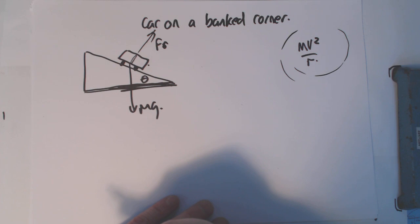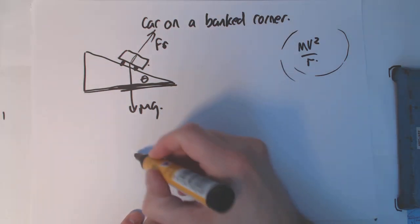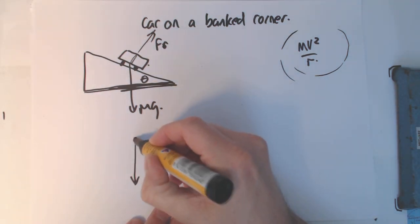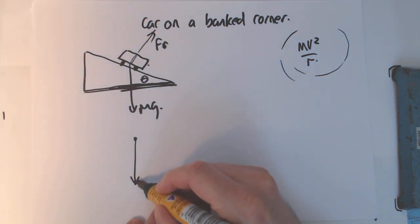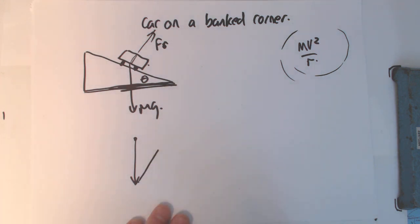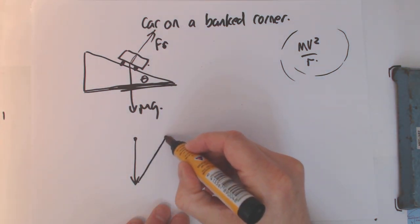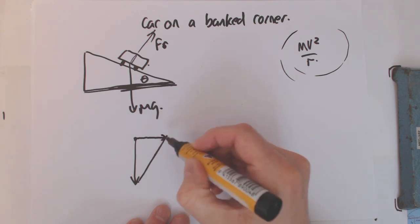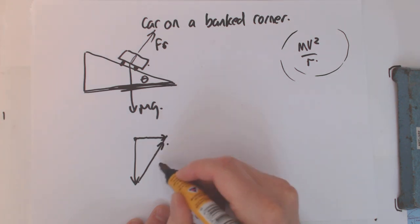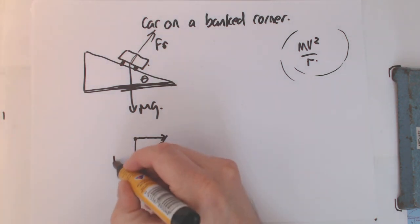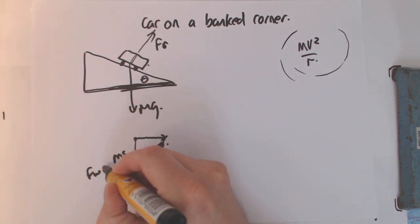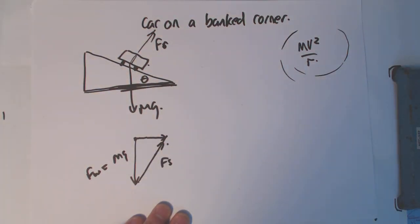You can already see that this vector diagram is going to look like the one for the conical pendulum, where we've got mg and we've got a reaction force. Again, the reaction force will continue until we end up with – the weight force will continue until we end up with that